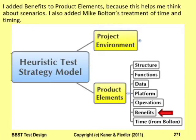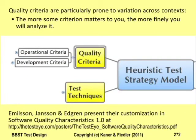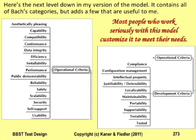In product elements, I add another subcategory that I call benefits. I find it useful to consider explicitly why people would want to use the product — what do they want to accomplish with it? Those are its benefits. I think anything that interferes with a benefit that people reasonably expect from a product is a significant quality issue. Michael Bolton added another subcategory to product elements that he calls time — he finds it useful to lump everything that has to do with time into one analysis group. Some people customize quality criteria from project to project. For example, entertainment value is important for games but not so important for databases. My version of the model includes many criteria beyond the original, so more things already fit.